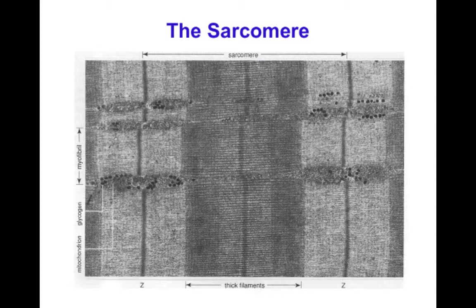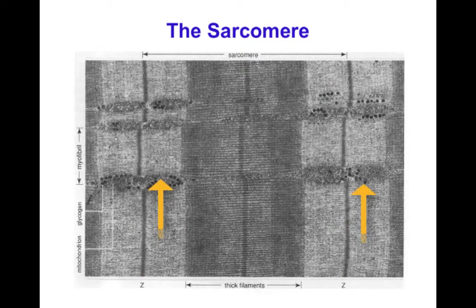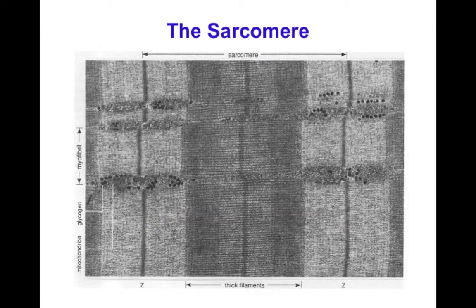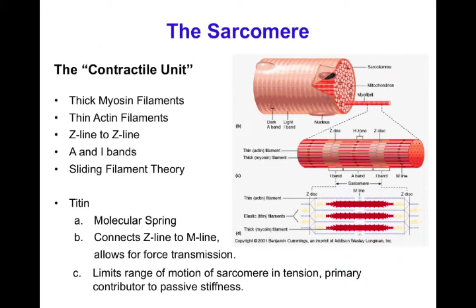The sarcomere length — the distance from Z disc to Z disc — is about 2 to 3 micrometers in skeletal muscle, approximately 2 micrometers when the muscle is at rest, which also happens to be close to the length when the force generated by the muscle is highest.